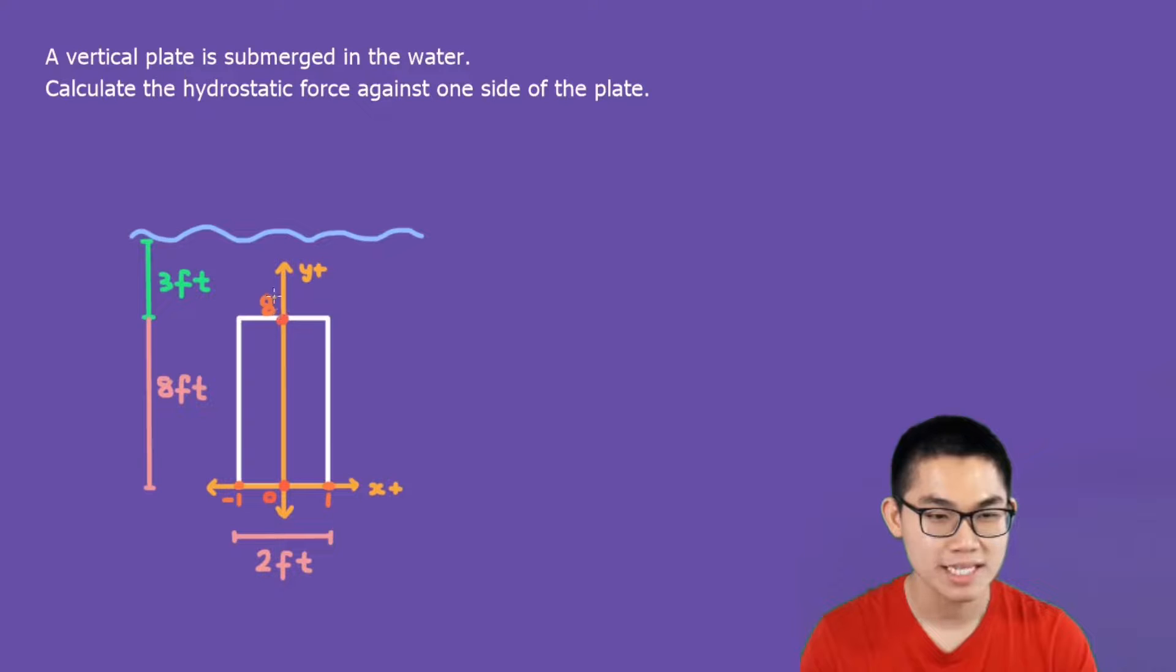So this point is 8 because we know that the height is 8. Starting at the center is 0 and here is going to be 8. The width is 2 feet, so the distance from here to here is 1 and the distance from here to here is also 1. That's why this is negative 1 here.